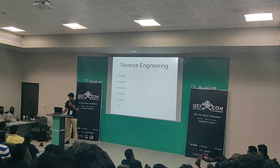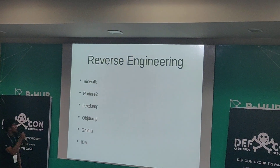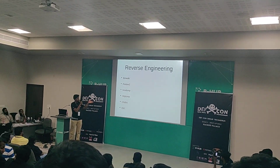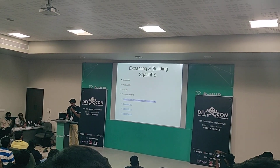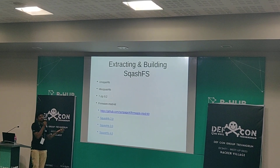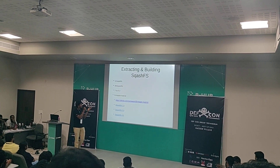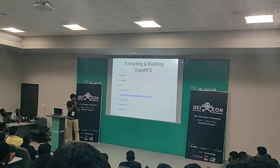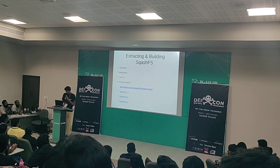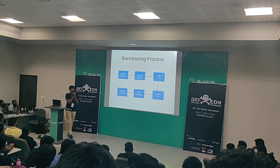The most common reverse engineering tools — which you may have used — are Binwalk, Radare2, hexdump, Ghidra, and IDA Pro. Most of these tools are pre-installed in Kali Linux. To extract the SquashFS file system you can use unsquashfs and mksquashfs, which are also pre-installed. For Windows we have 7-Zip version 9.2 and Firmware Mod Kit, which supports most versions of the SquashFS file system and can extract as well as rebuild firmwares.